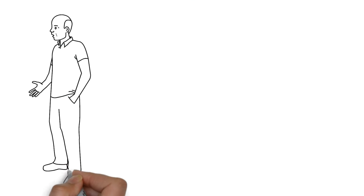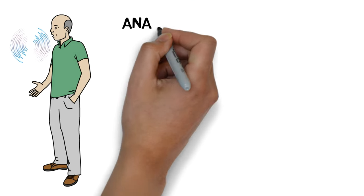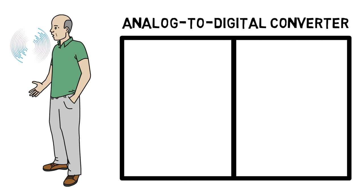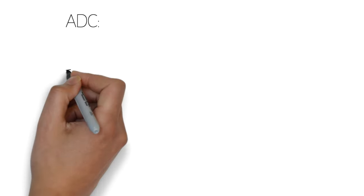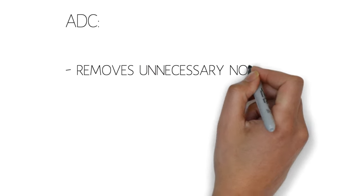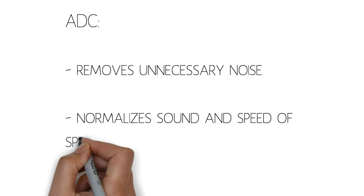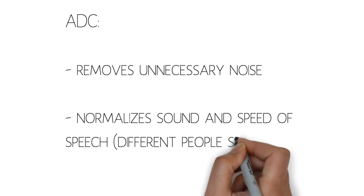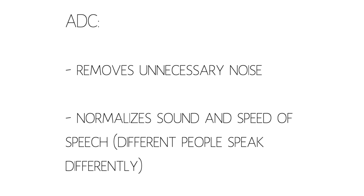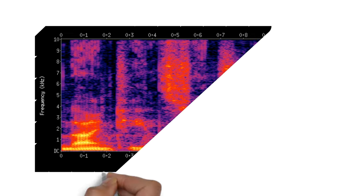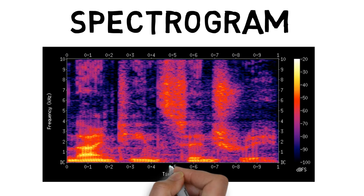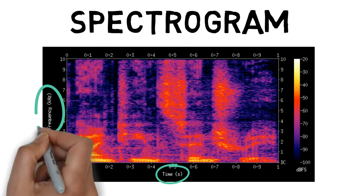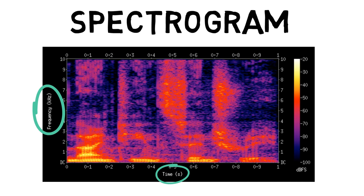So when people speak, they create vibrations in the air. A device known as the analog-to-digital converter transforms the sound wave into binary data that the machine can understand. The ADC also filters the sound to remove unnecessary noise and normalizes the sound and speed of the speech to match the prerecorded samples in the machine's device. It then separates the data into different bands of frequency, which the spectrogram then analyzes further. On the x-axis there is time, and the y-axis plots the frequency of a sound, as in high pitches versus low pitches.